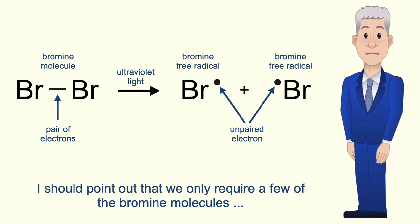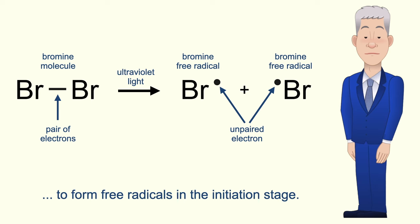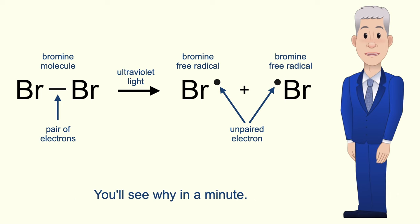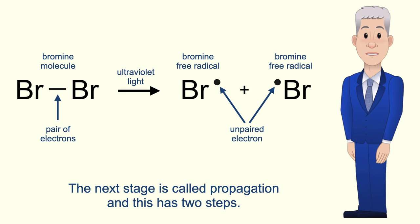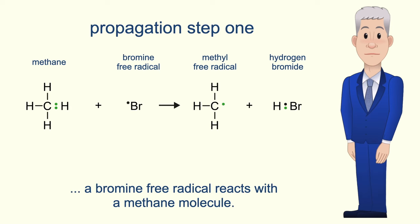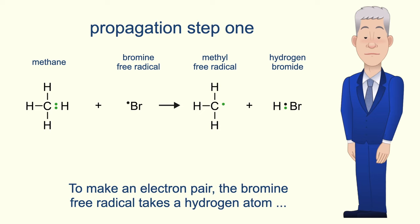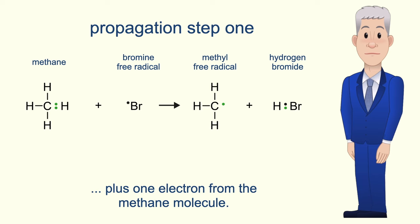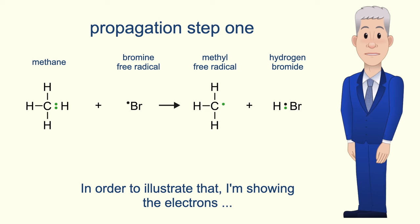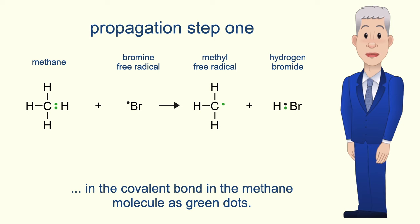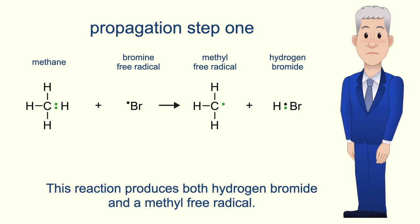In the initiation stage we make a pair of bromine free radicals. I should point out that we only require a few of the bromine molecules to form free radicals in the initiation stage, and you'll see why in a minute. The next stage is called propagation and this has two steps. In the first step of propagation, a bromine free radical reacts with a methane molecule. Remember that a free radical has an unpaired electron. To make an electron pair, the bromine free radical takes a hydrogen atom plus one electron from the methane molecule. This reaction produces both hydrogen bromide and a methyl free radical.